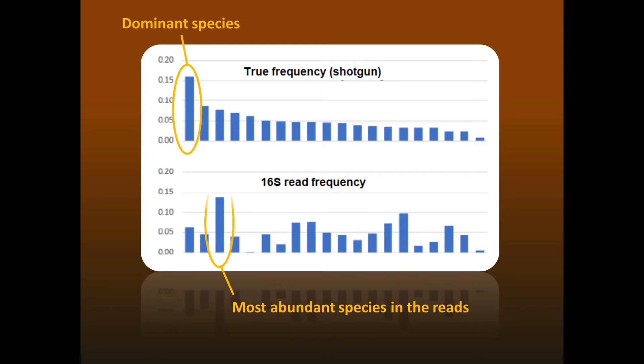If you can't measure frequencies, then there are some basic questions that you cannot answer. For example, you cannot determine the dominant OTU. As this example shows, the most abundant species in the sample may not be the most abundant species in the reads.